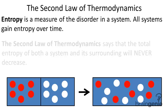The second law of thermodynamics. Before we talk about the second law of thermodynamics, it's important to talk about entropy. Entropy is a measure of the disorder in a system. All systems gain entropy over time — that means they become more disordered over time.